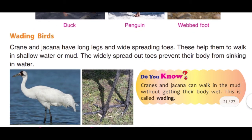Wading birds: Wading birds aise birds ko kaha jata hai jo pani mein ya kichad mein chalte hain. Crane and jacana have long legs and wide-spreading toes. These help them to walk in shallow water or mud. Unke wide-spreading toes ki madad se unka sharir pani mein bheegne se bachta hai, aur yeh aasani se kichad aur pani mein chal sakte hain. The widely spread toes prevent the body from sinking in water.